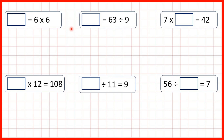Here we have some missing number multiplication and division problems. But these first two questions aren't really missing number problems at all, because all we have on this side of the equal sign is an answer box. It doesn't matter whether the equal sign comes at the start of the calculation or at the end — we do the same thing.